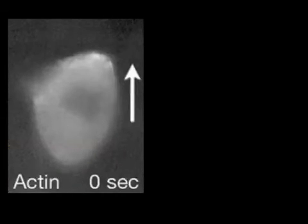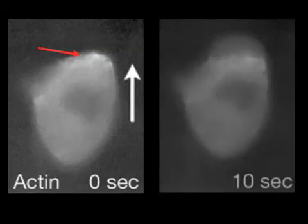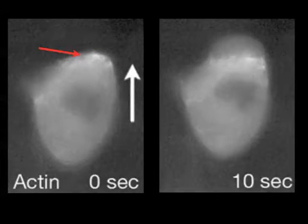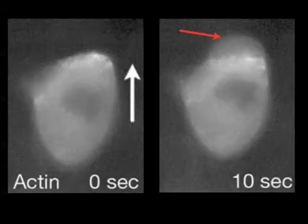We wanted to know whether this scenario also applies for germ cells and therefore looked at the distribution of GFP-tagged actin in the migrating cells. Indeed, we saw elevated levels of actin at the cell front. But looking carefully at a high temporal resolution, we realized that when a protrusion occurred, it was free of actin. This indicated to us that actin polymerization itself could not drive these protrusions.